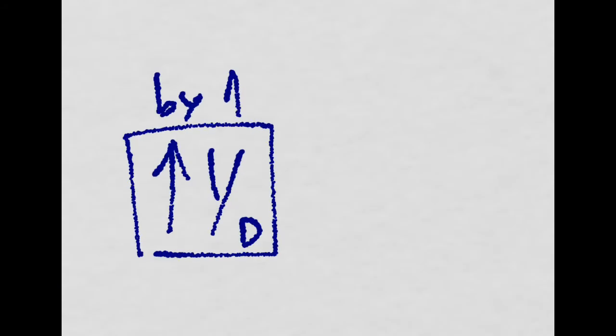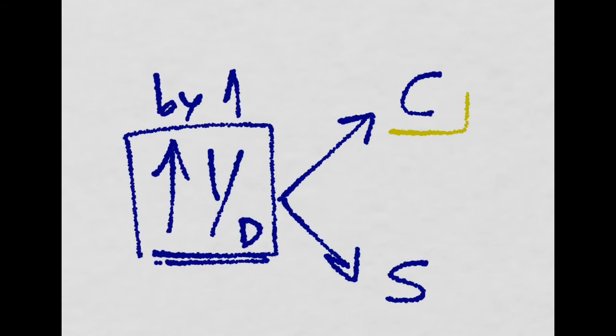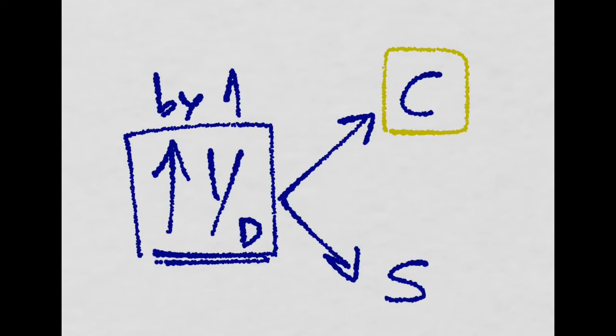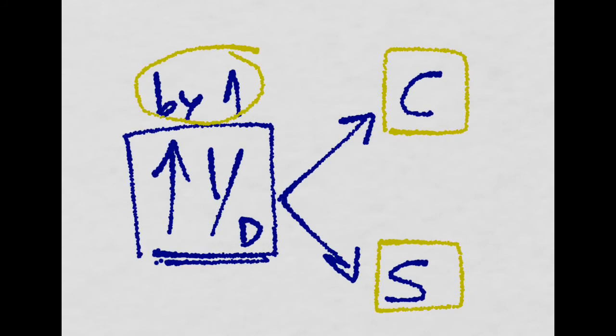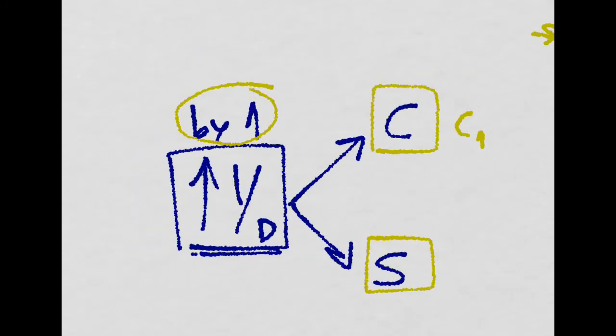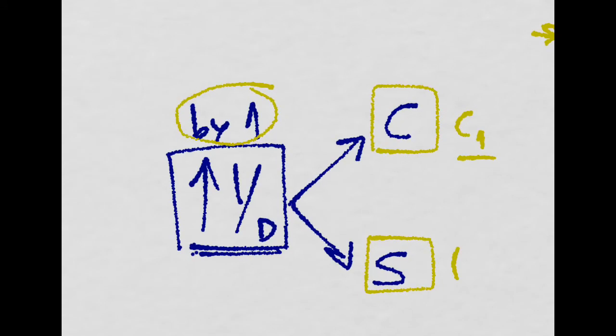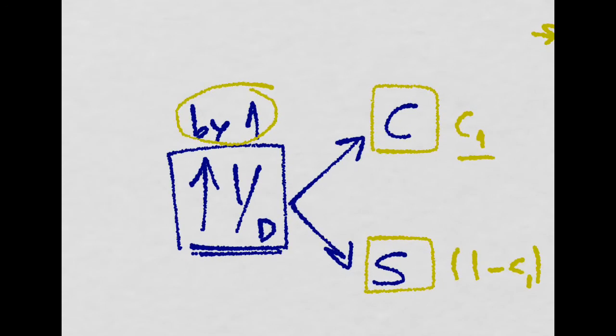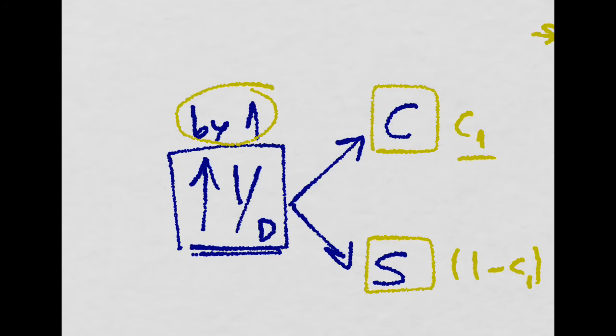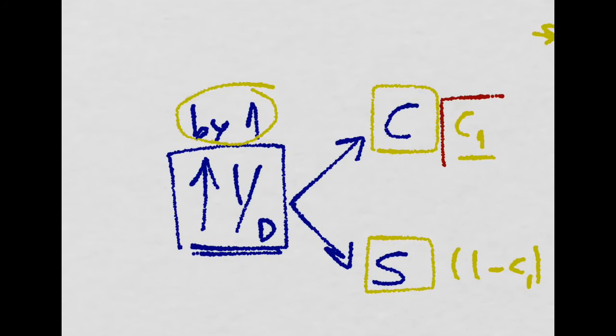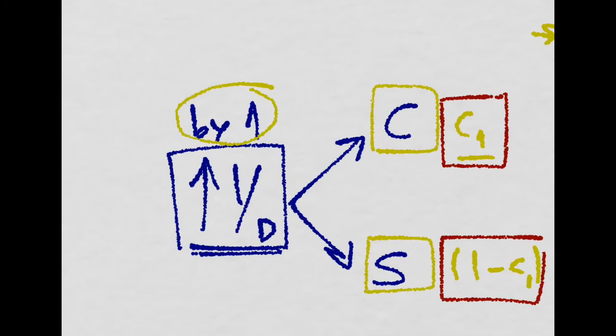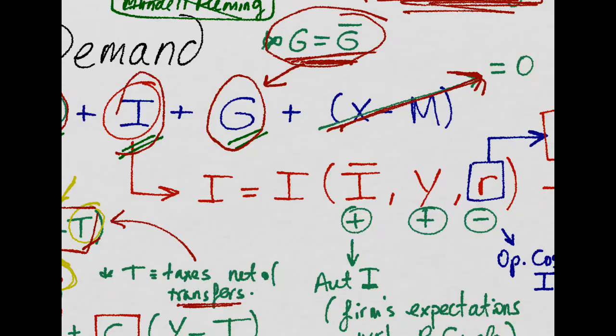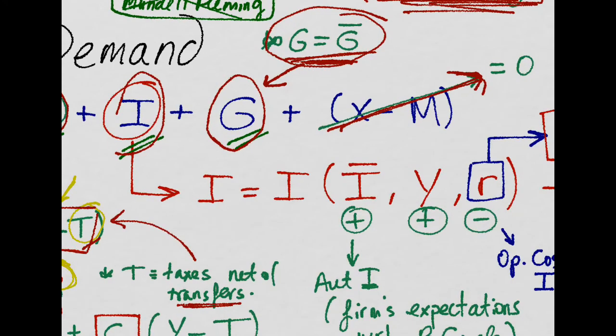C1 is the marginal propensity to consume. If disposable income increases by one unit, people will consume one part of this and save another part. Of this one unit, they will consume C1 and save one minus C1. This marginal effect in consumption is the marginal propensity to consume, and this is the marginal propensity to save. So that's the consumption function. We will look at investment in our next video.